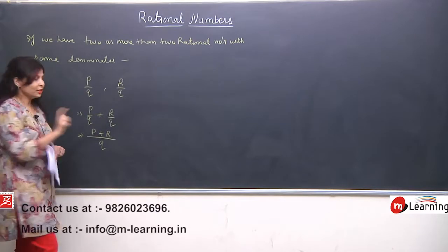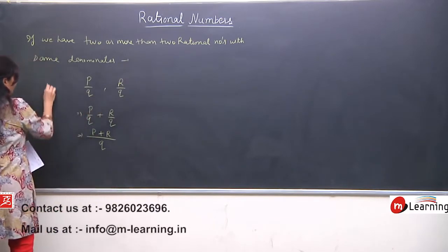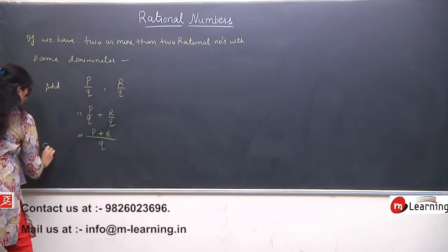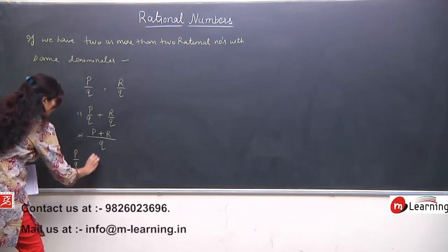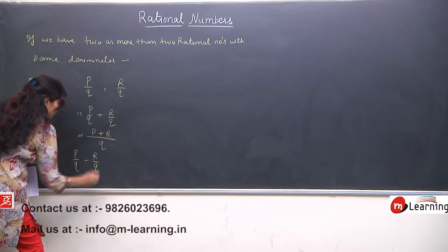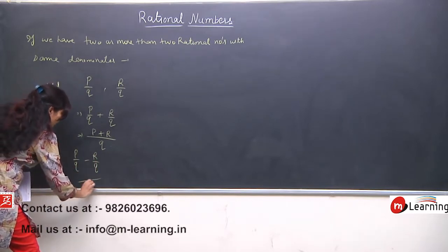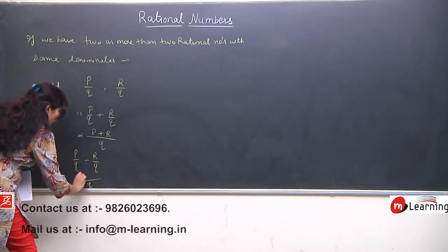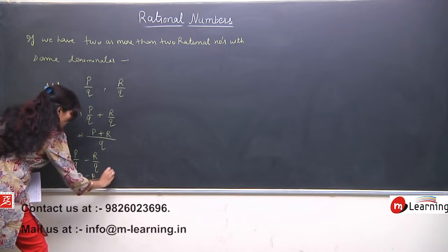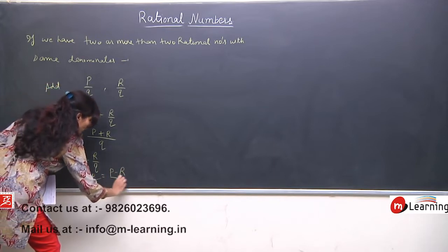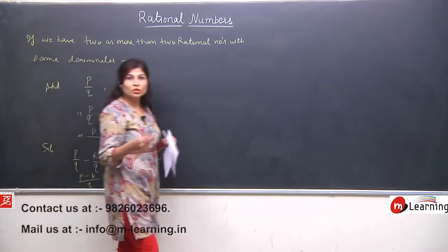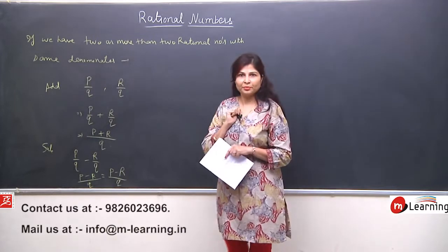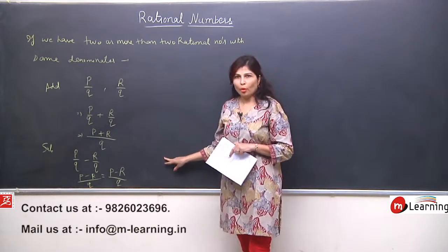Same property for subtraction. For example, if we subtract P upon Q and R upon Q, then what we will do? LCM same rahega, the LCM is very easy. So answer will be P minus R upon Q. This shows we need to subtract only the numerator. So this is the property.